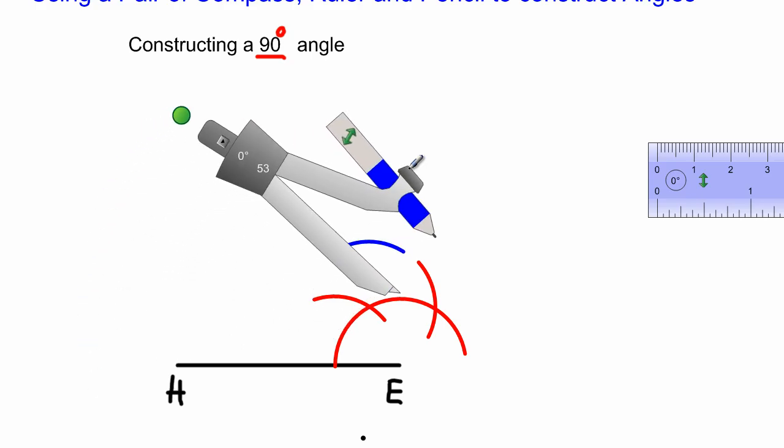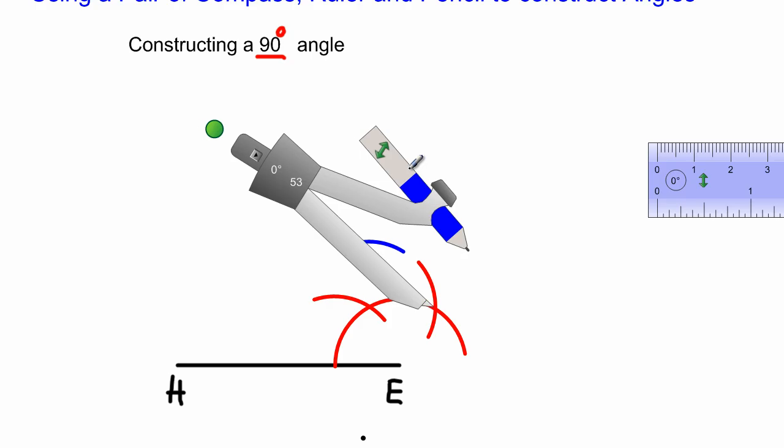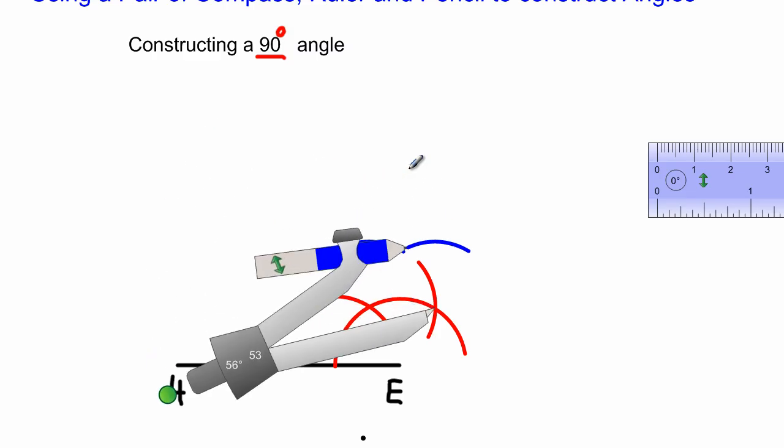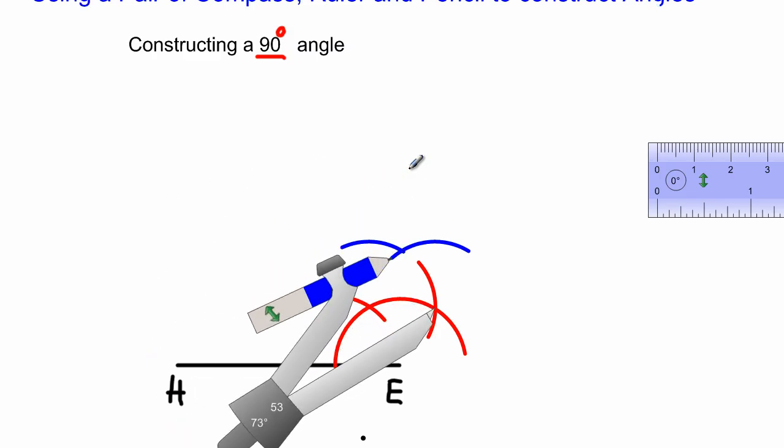Then I'm going to take it and I'm going to place it here at that intersection, because I'm cutting this 60 degree into two equal parts, and I'm going to swing another arc right there.